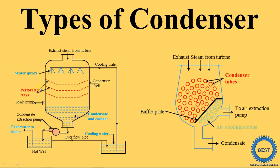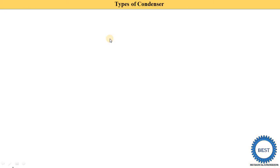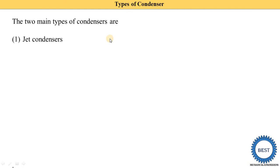In this video, I explain types of condensers. The main two types of condensers are: first, the jet type condensers, and second, the surface condenser. First we understand what are jet condensers and their types.